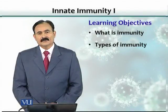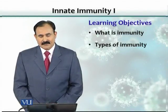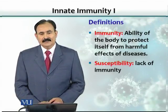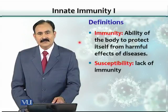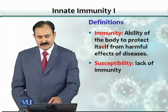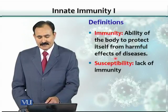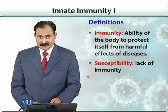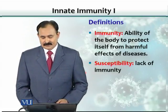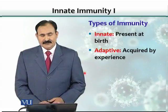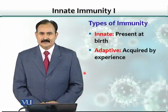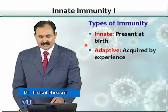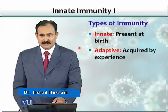The learning objectives include: what is immunity and what are the various types of immunity. Immunity is basically the ability of the body to protect itself from harmful effects of diseases or infections, and its lack is called susceptibility. There are two types of immunity or immune responses: innate immunity and adaptive immunity.